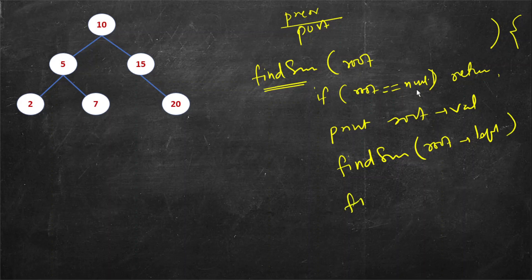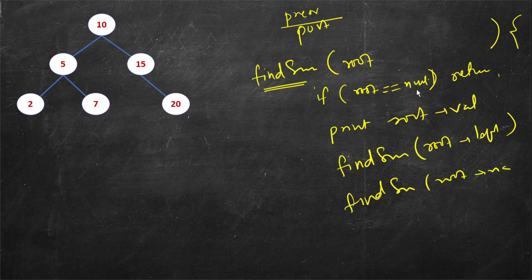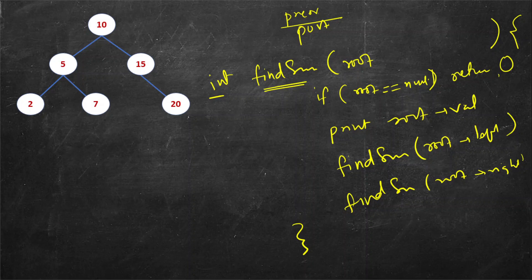Then find sum root right and the traversal function is complete. Now instead of just visiting it we have to also calculate the sum. So let's modify it and this would return int. If root is null then you should return 0.